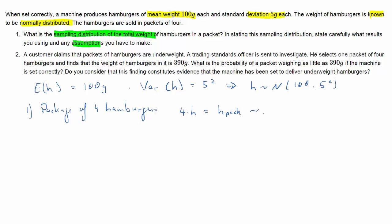Now 4H is really H plus H plus H plus H, we're just adding four hamburgers, and therefore the mean is just four times the expected value of H. Now what about the variance?